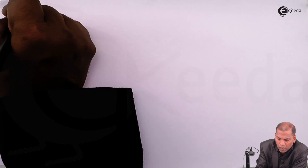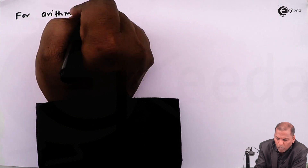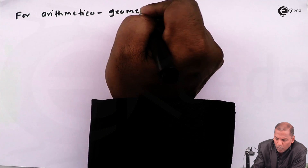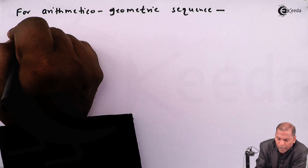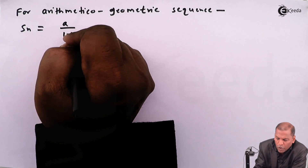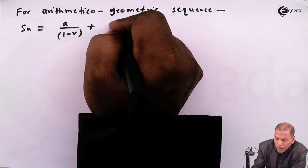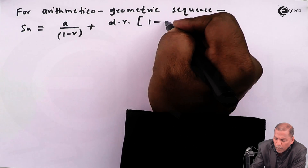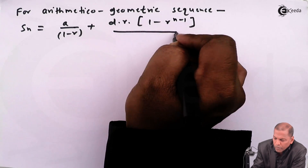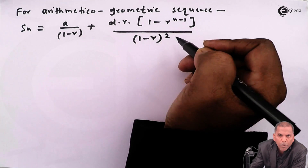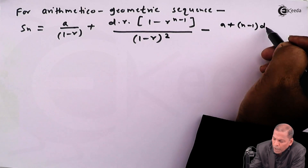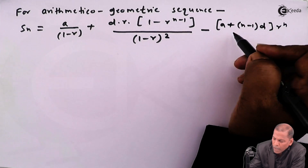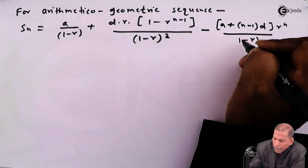So for the AP we have first term a = 1, common difference d = 3, and for the GP we have common ratio r = -1/2. Now for the arithmetico-geometric sequence, we have the formula: S_n = a/(1-r) + d·r·(1 - r^(n-1)) / (1-r)² - [a + (n-1)·d] · r^n / (1-r).